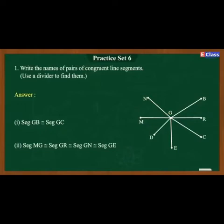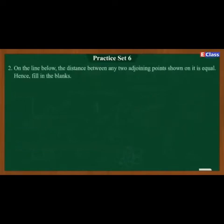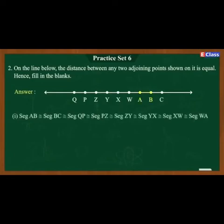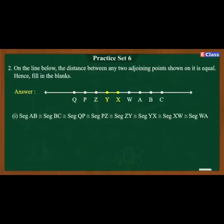Now let's solve Question 2 of Practice Set 6. On the line, the distance between any two adjoining points shown on it is equal. Answer 1: Segment AB is congruent to segment BC, which is congruent to segment QP, which is congruent to segment PZ, which is congruent to segment ZY, which is congruent to segment YX. Segment XW is congruent to segment WA.